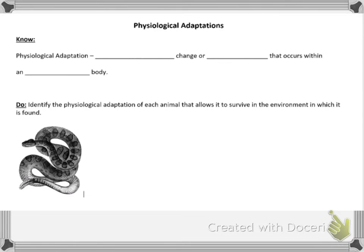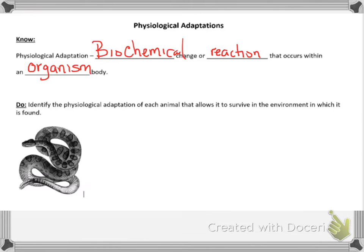Alright guys, this is physiological adaptations — the last of the three adaptations videos we're going to have. First, we're going to define the term: a physiological adaptation is a biochemical change or reaction that occurs within an organism's body. These are pretty simple things that you'll think of and be like, 'Oh okay, I got that,' once we start talking about them.